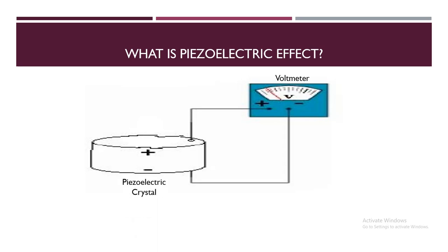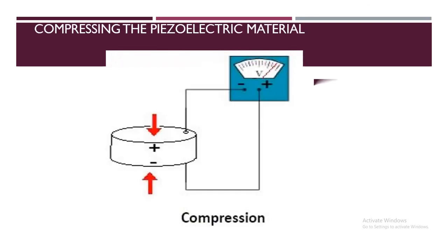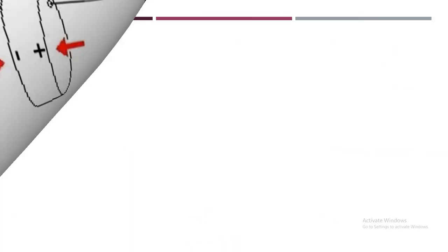This is a piezoelectric crystal and a voltmeter connected to it. When they applied mechanical stress to this piezoelectric crystal, they observed a voltage reading, as you can see in this voltmeter. Now this is what piezoelectric effect is, but why did that happen?